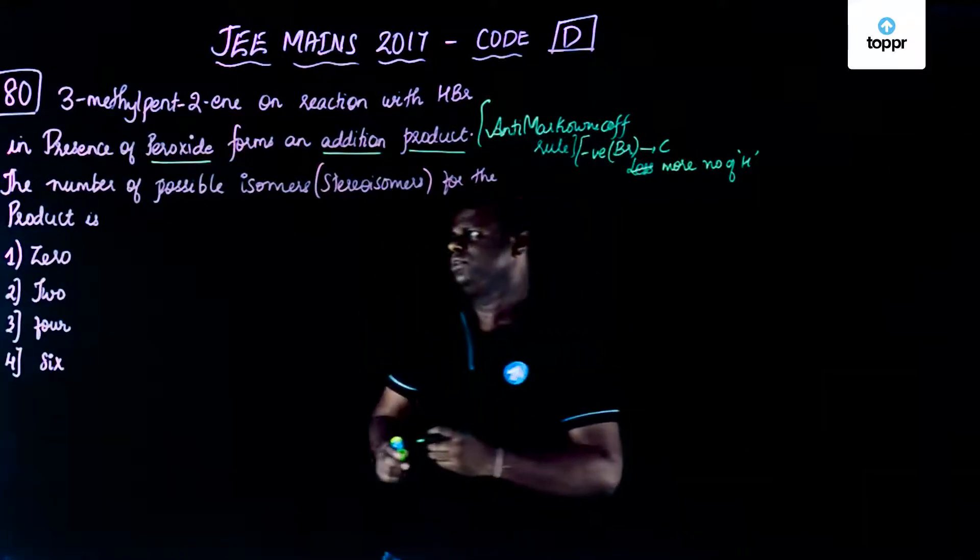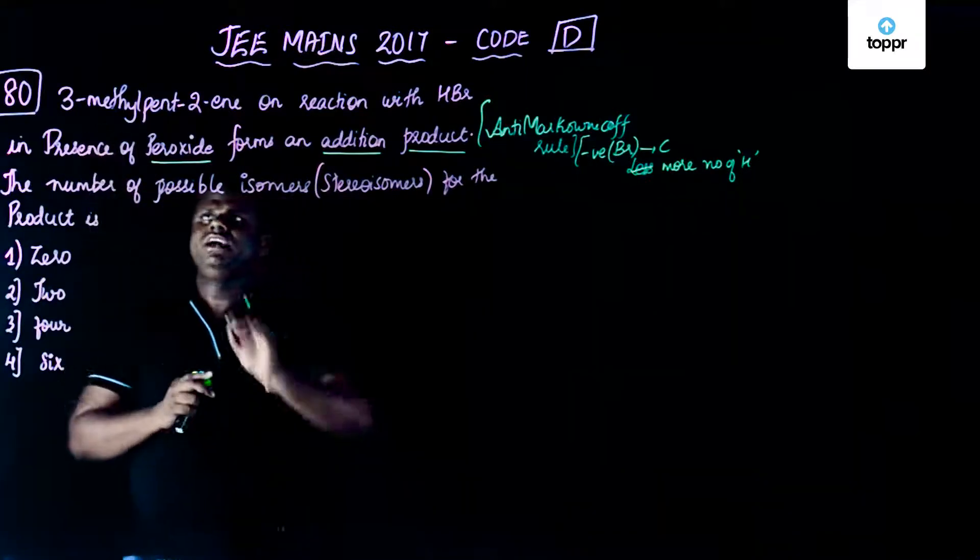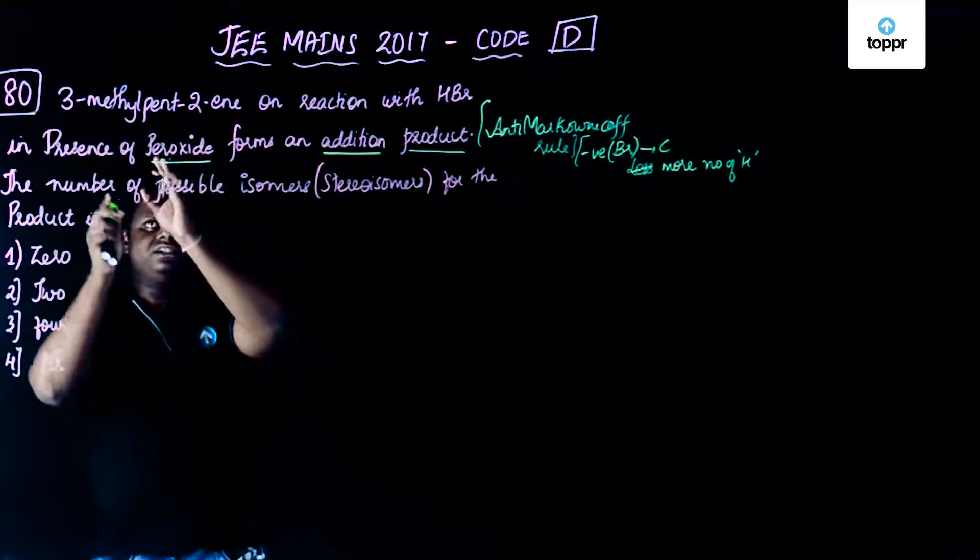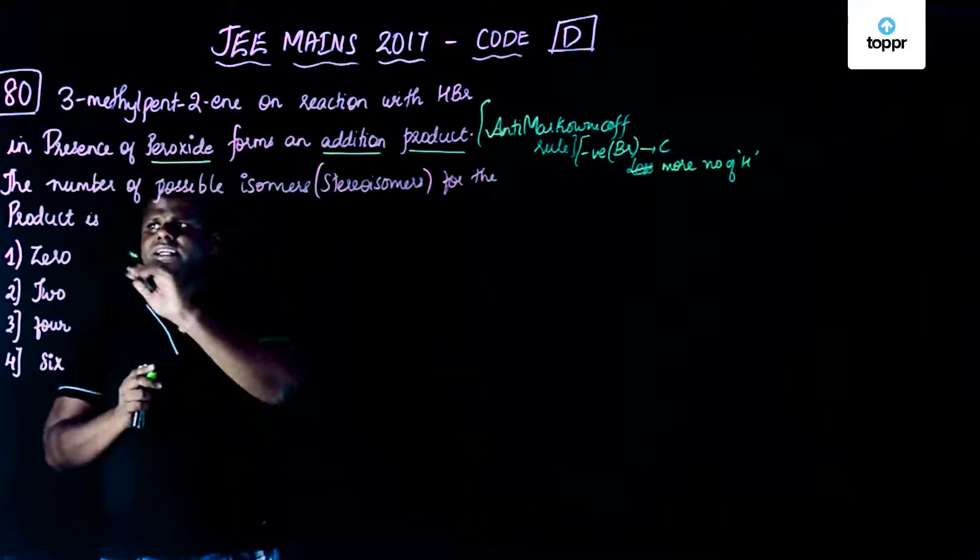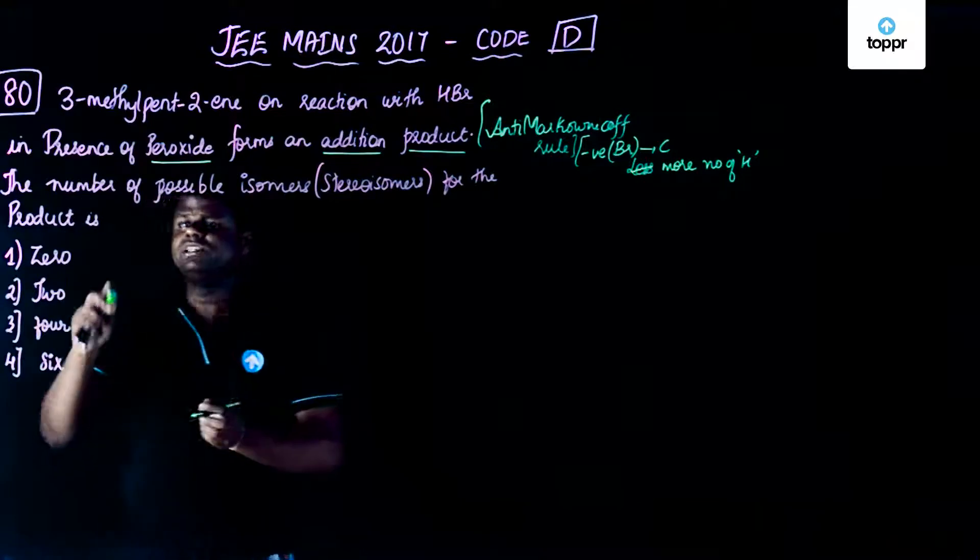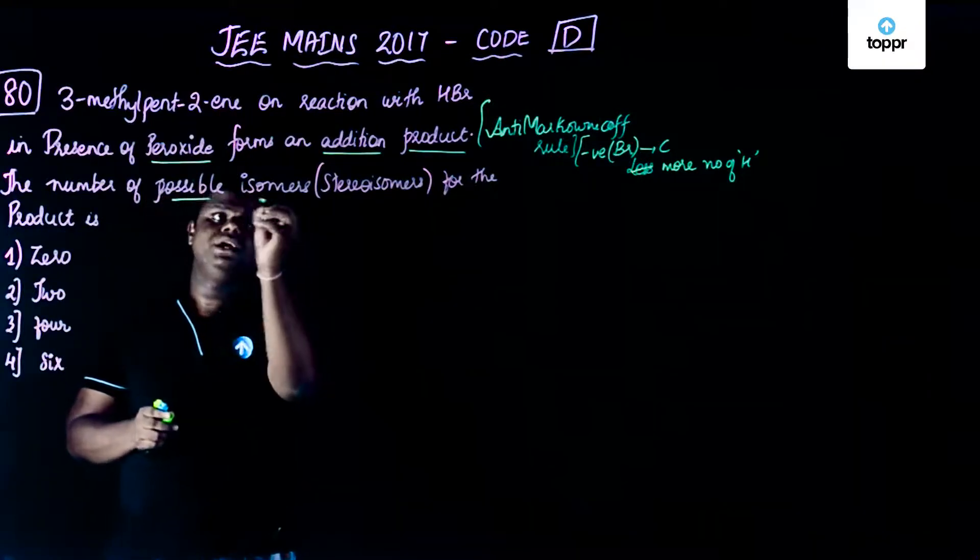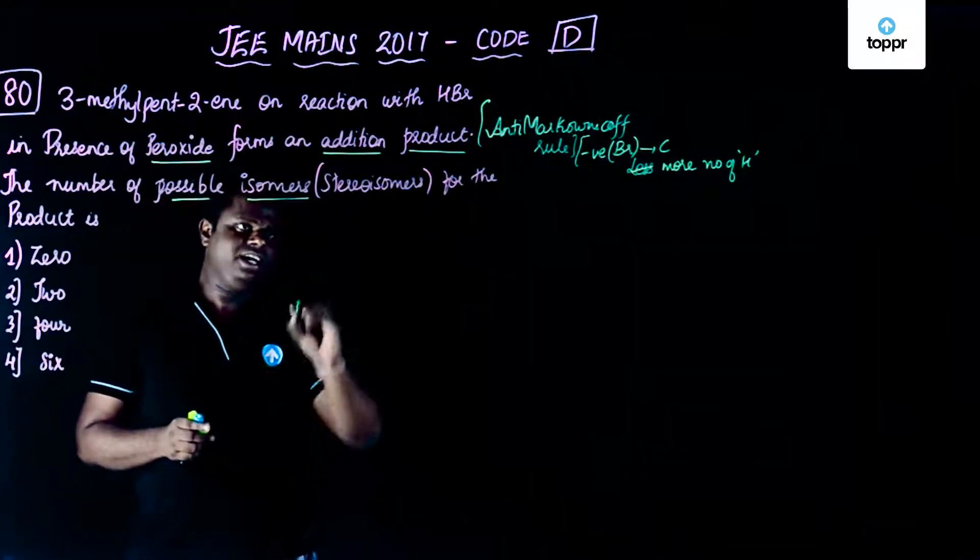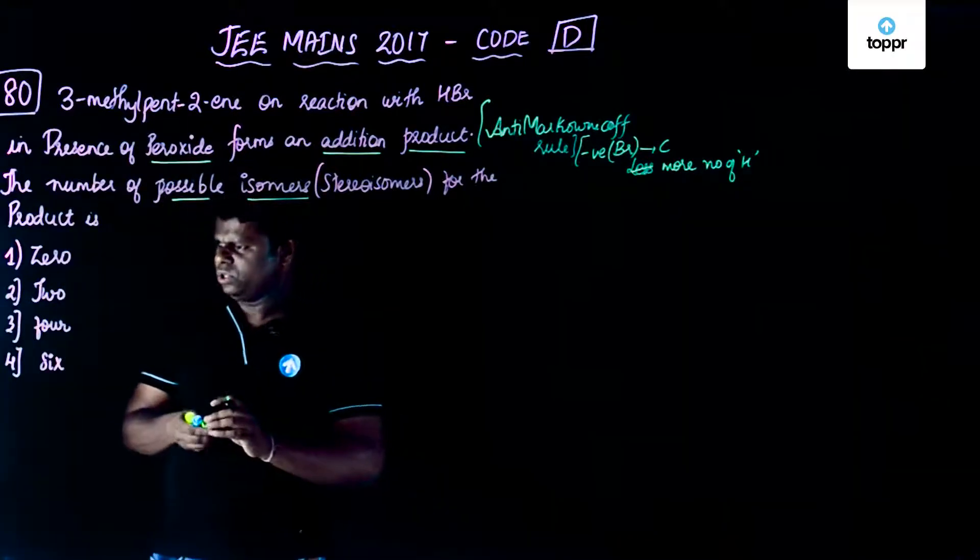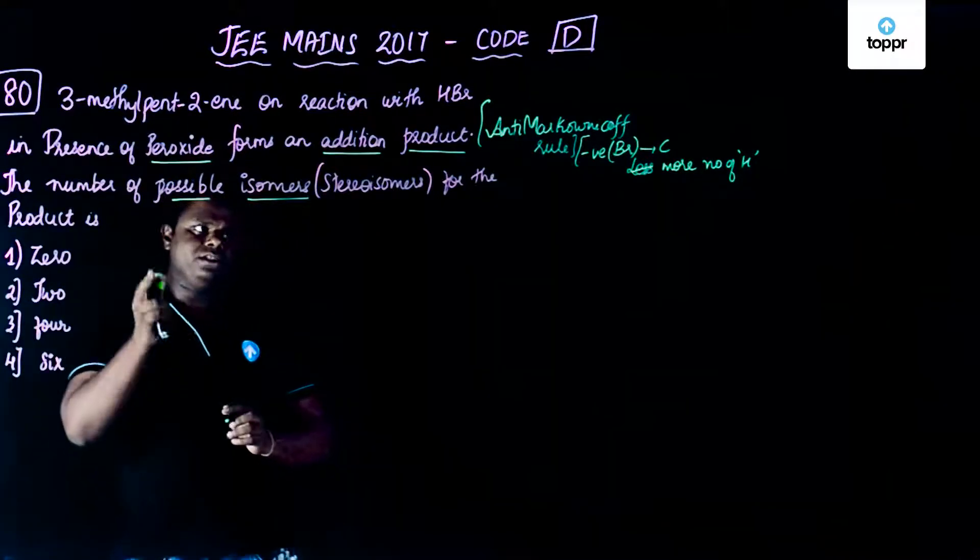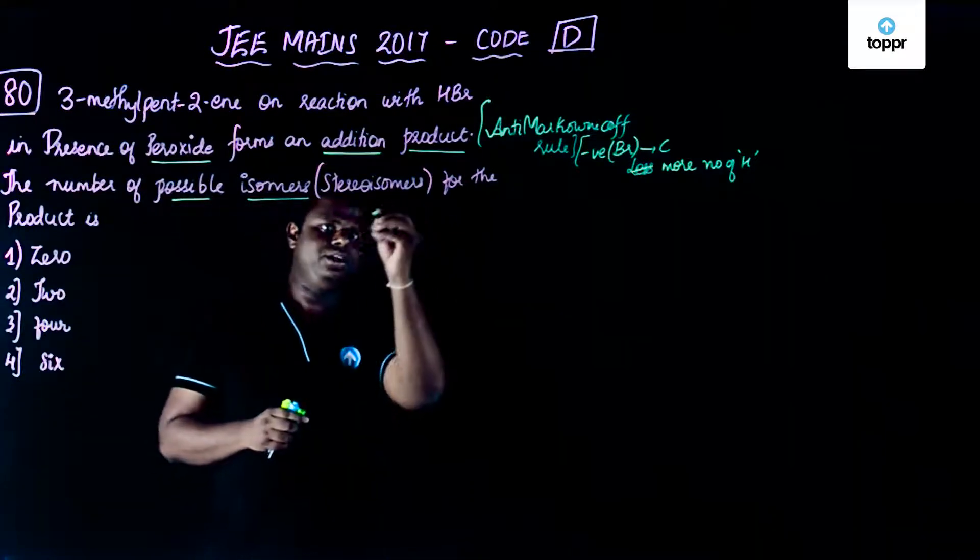So what exactly is going to happen? So let's first of all write down the reactant that is 3-methylpent-2-ene. Before that let's see what is the requirement of the question. The question is asking the number of possible stereoisomers for the product. The options are 0, 2, 4 and 6. So let's see what exactly is going to be the solution for this question.